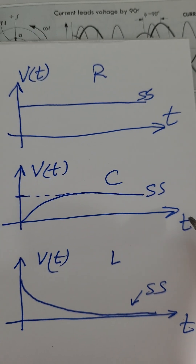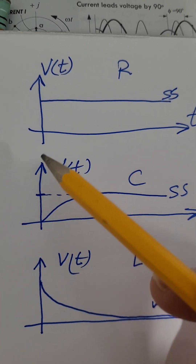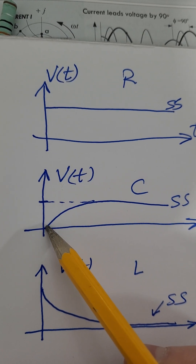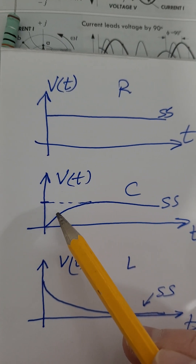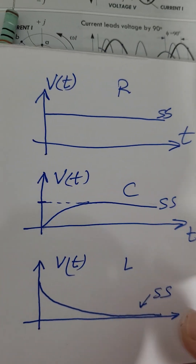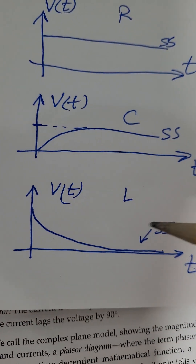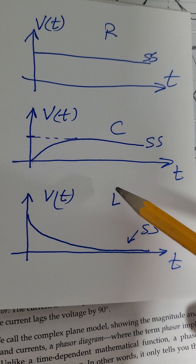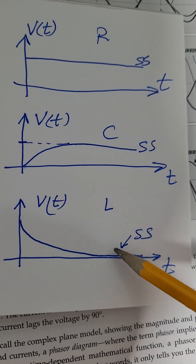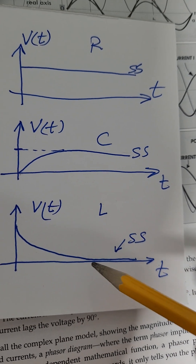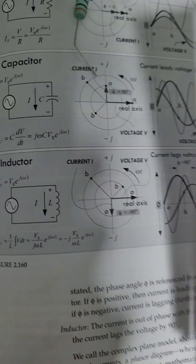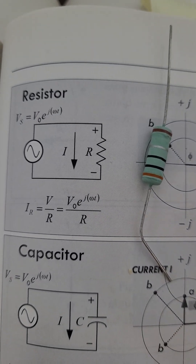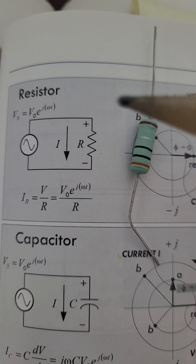For example, for a capacitor the transient analysis shows that at time equals zero the voltage is zero, but over time the voltage increases and reaches steady state. For an inductor, at time equals zero the voltage is maximum, and over time the voltage decays to near zero.